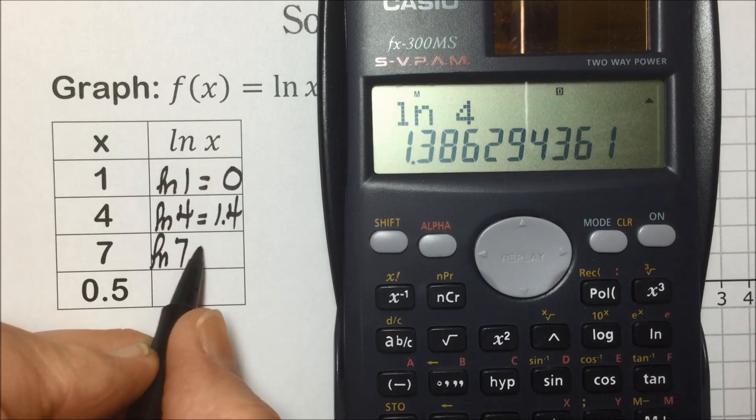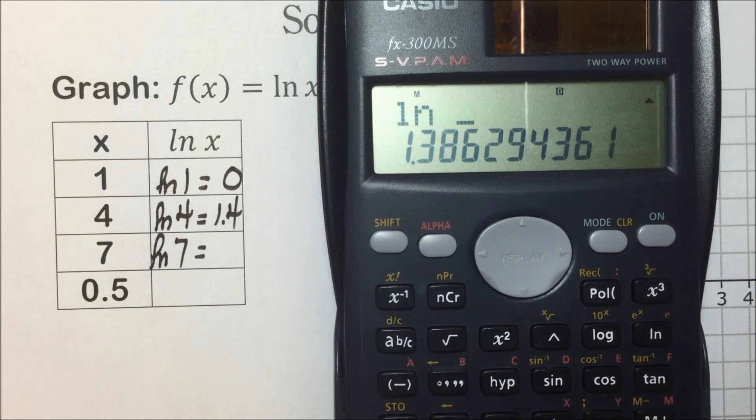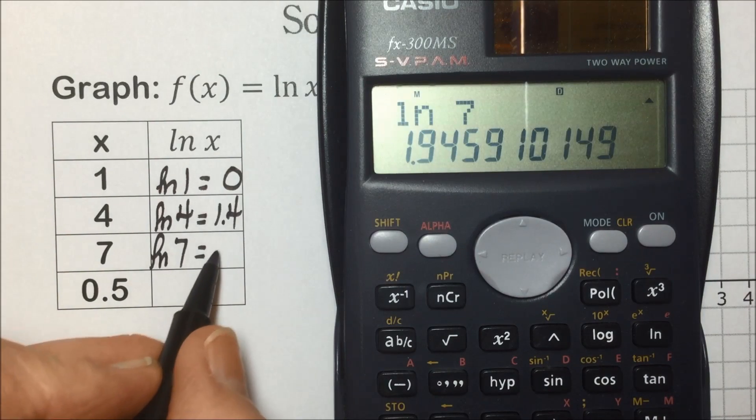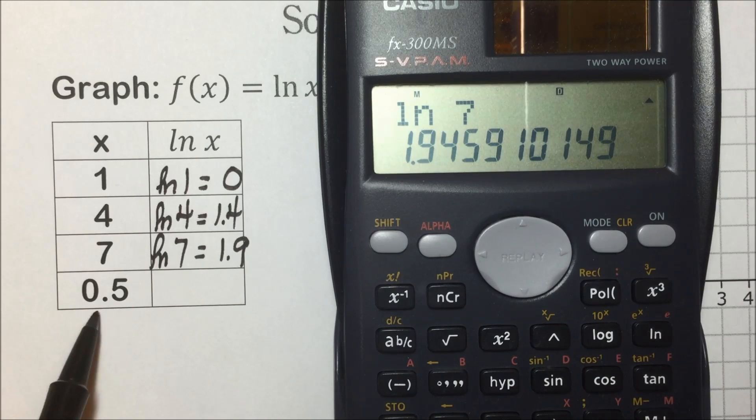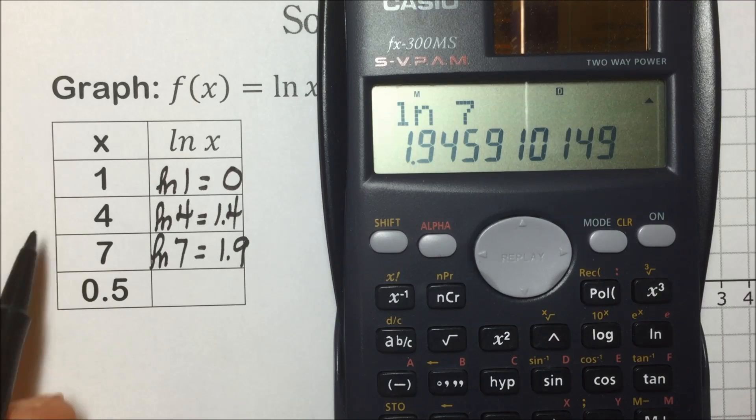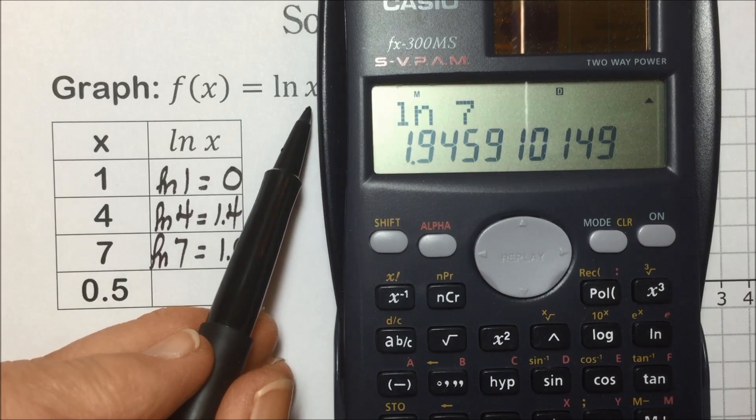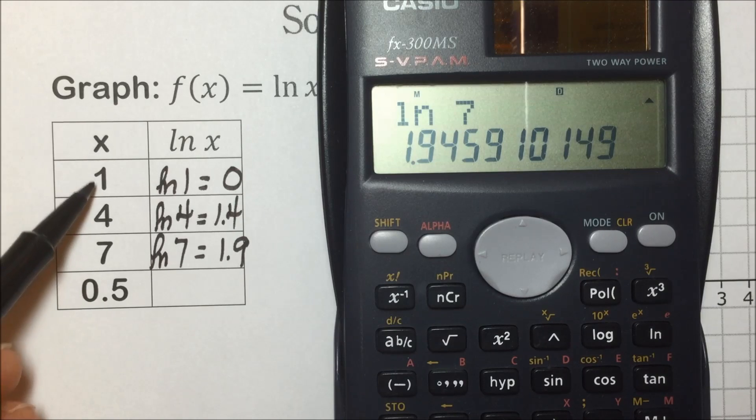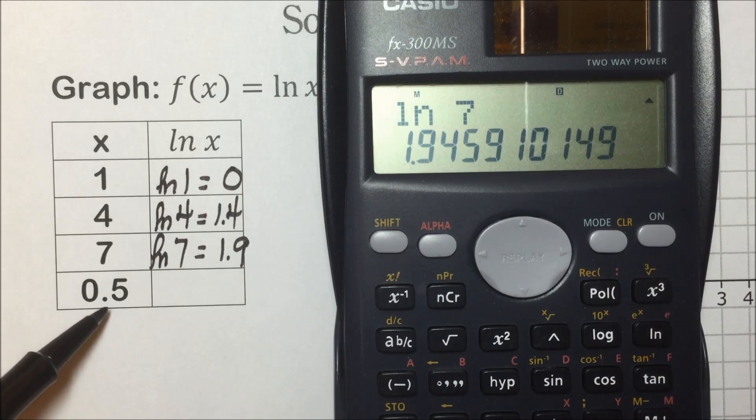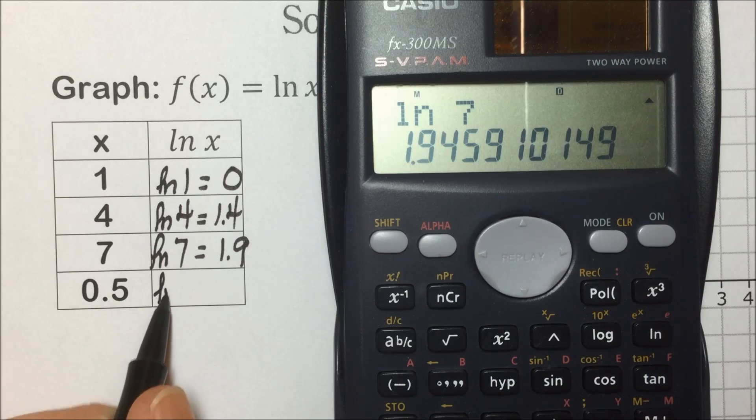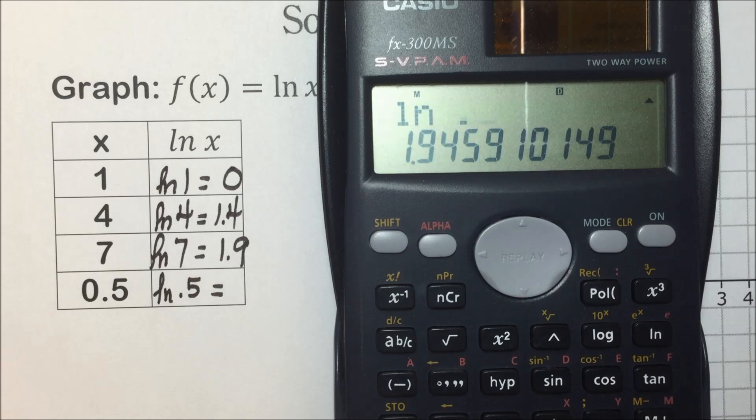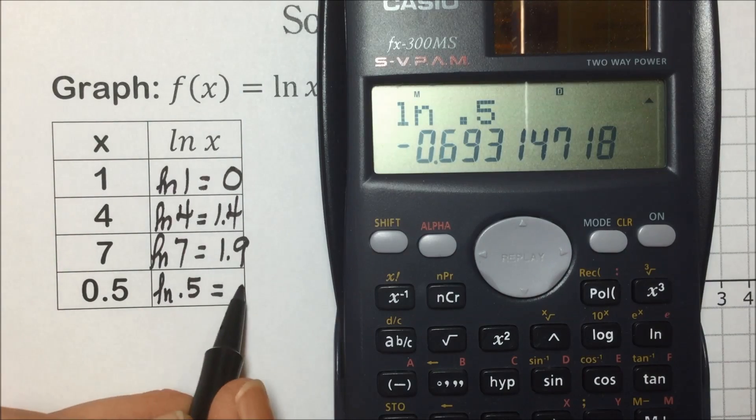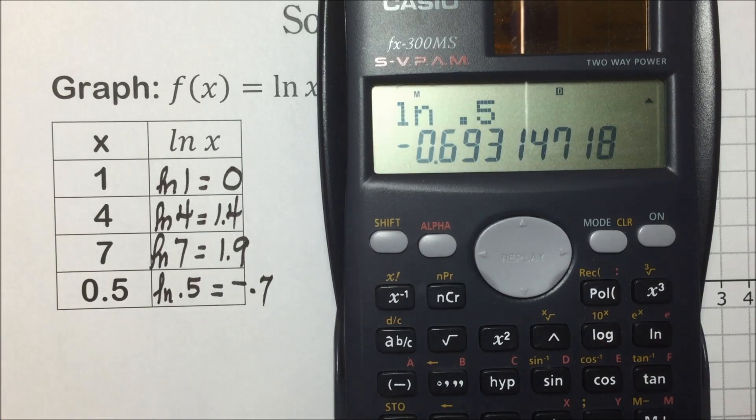The ln of 7, natural log of 7 ends up with a value of 1.9. What about putting in values between 1 and 0? We can't take logs of negative numbers, but we can take values that are ever closer to 0. So what happens when we take the natural log, base e of 0.5, so tapping the natural log, putting in 0.5, we end up with negative 0.7 rounding to the nearest tenth.